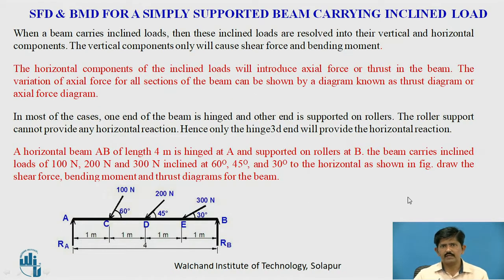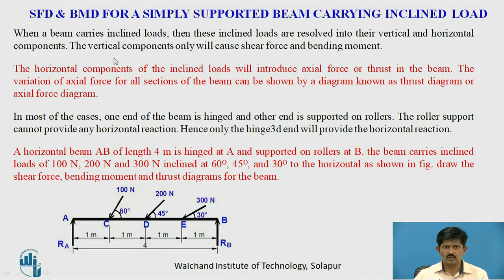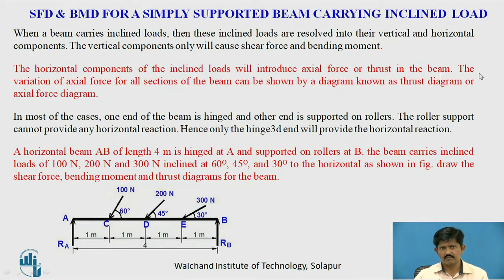Shear force and bending moment for a simply supported beam carrying inclined load: when a beam carries inclined load, these inclined loads are resolved into vertical and horizontal components. The vertical components will cause shear force and bending moment, whereas the horizontal components of the inclined loads will introduce axial force or thrust in the beam. The variation of axial force for all sections of the beam can be shown by a diagram known as the thrust diagram or axial force diagram.